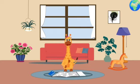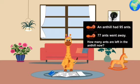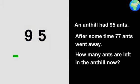Let's look at the next question given in the newspaper. An ant hill had 95 ants. After some time, 77 ants went away. How many ants are left in the ant hill now? 95 minus 77 is equal to what?